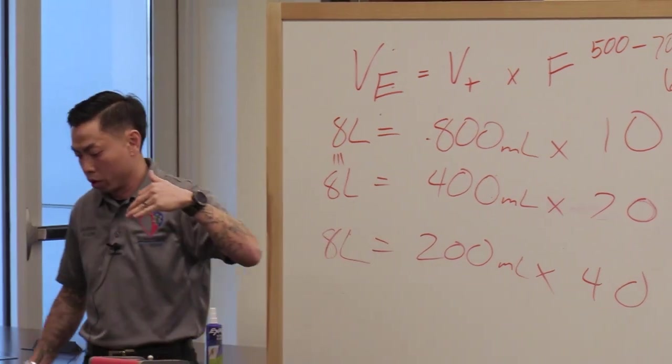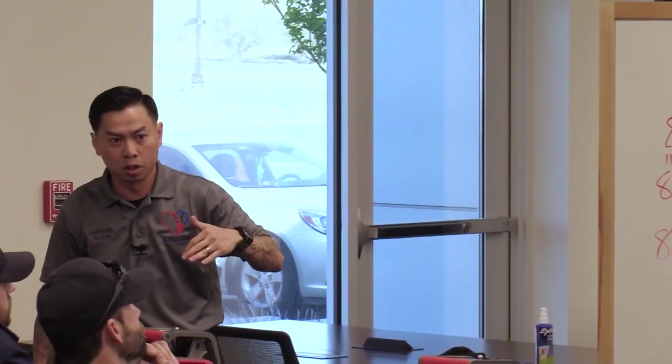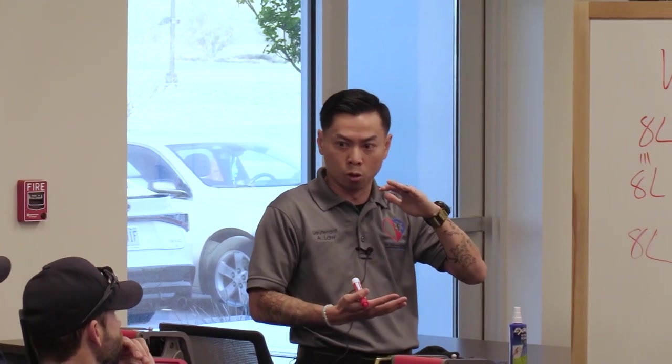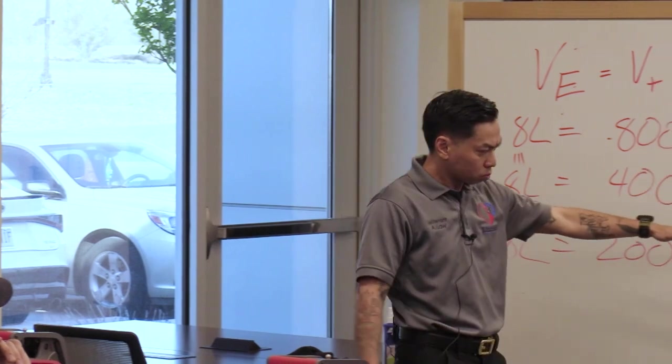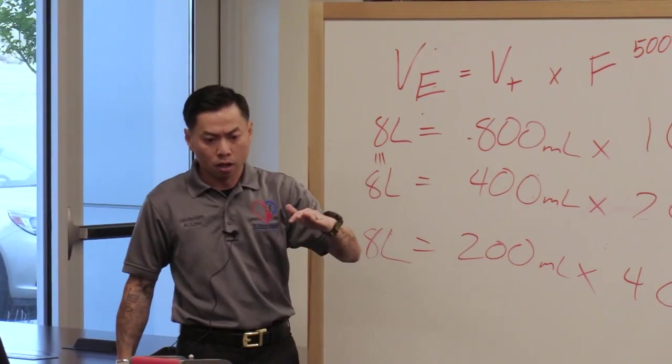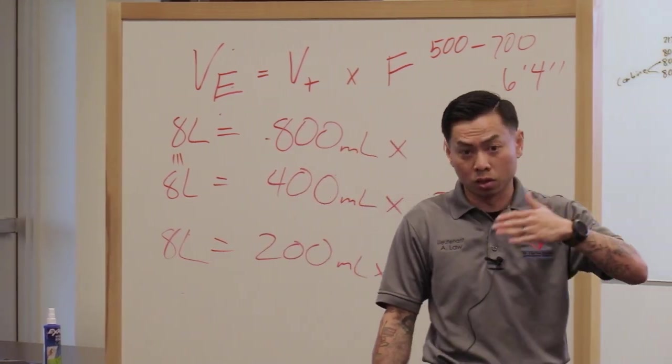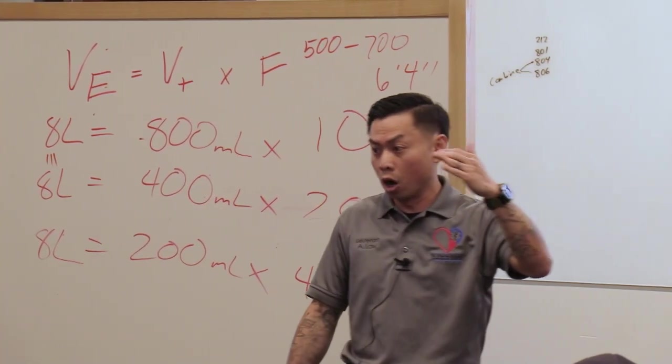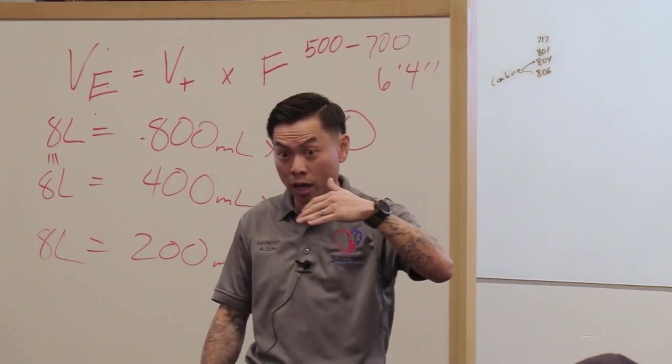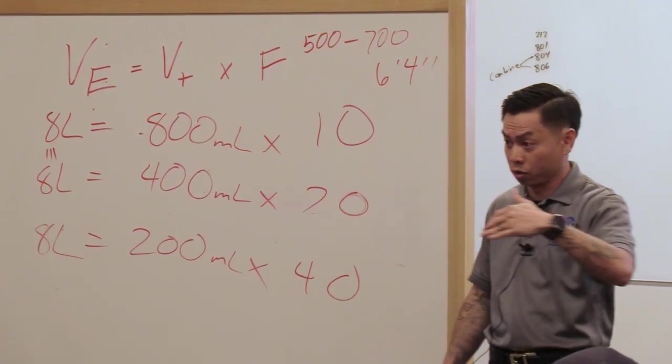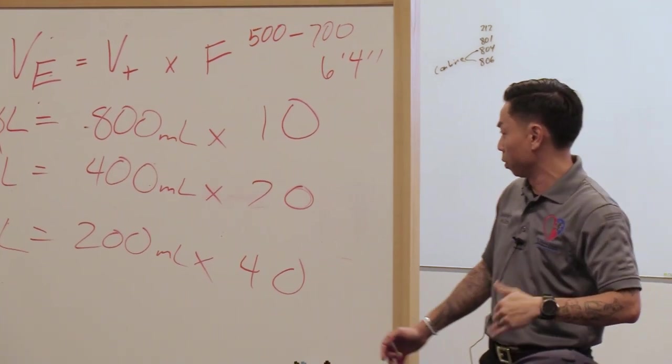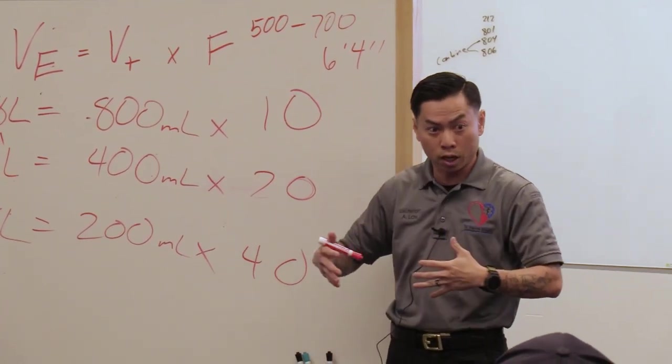Well, the ARDSNet test came out and one of the studies was, what if we did lung protective strategy? What lung protective strategy means is let's not dump as much air as we can in the lung at full capacity. Let's do a little bit of air, enough to get to most of the lobes, but we'll make up for it in rate. And as they did that, they actually had to end the study early because it was unethical for them to do any other strategy than lung protective strategy because it was working so well.